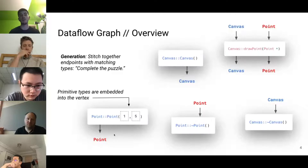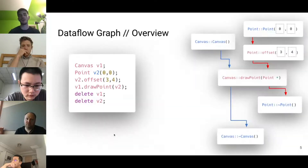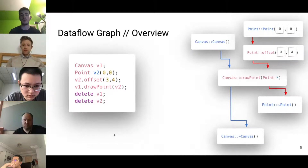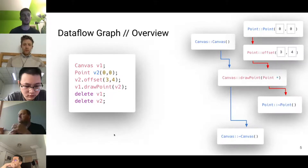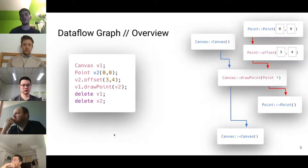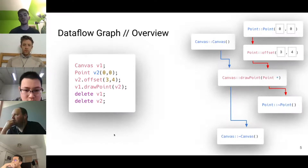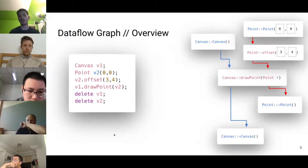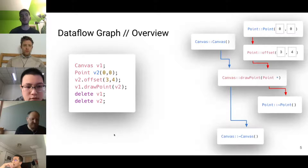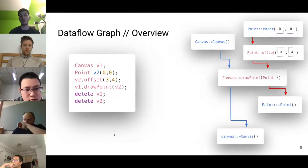You can convert your whole API surface into a set of endpoints with expected inputs and outputs — for example, a canvas constructor produces a canvas object, and a canvas destructor consumes one. With this representation, generating a new test case becomes: how can we link together a bunch of endpoints so that all edges are connected and types match properly? A complete data flow graph representing a single API interaction maps directly to equivalent C++ source code, with proper object creation and deletion automatically enforced.